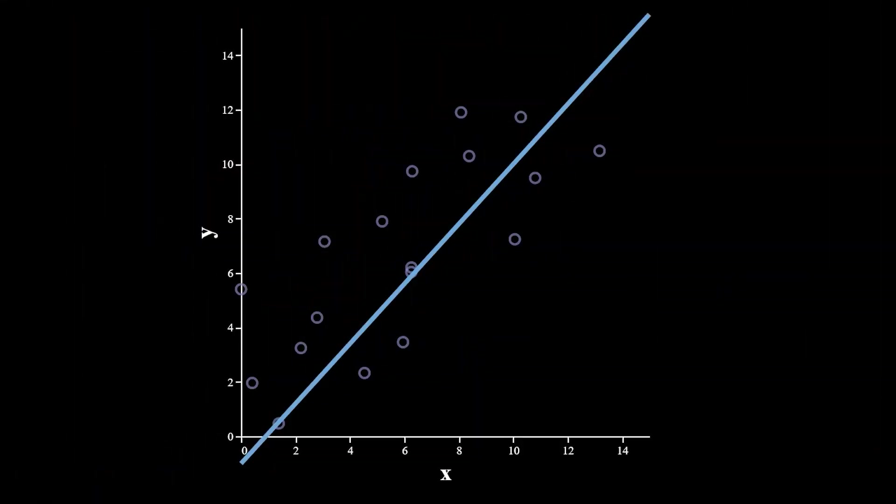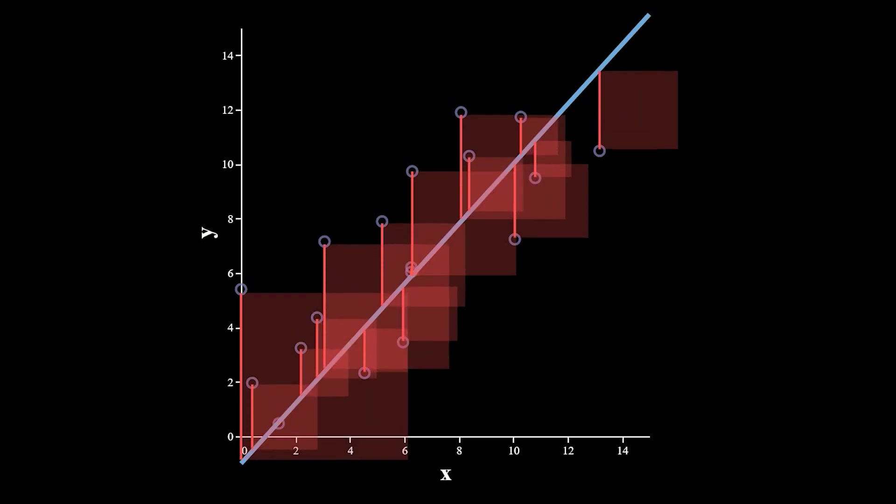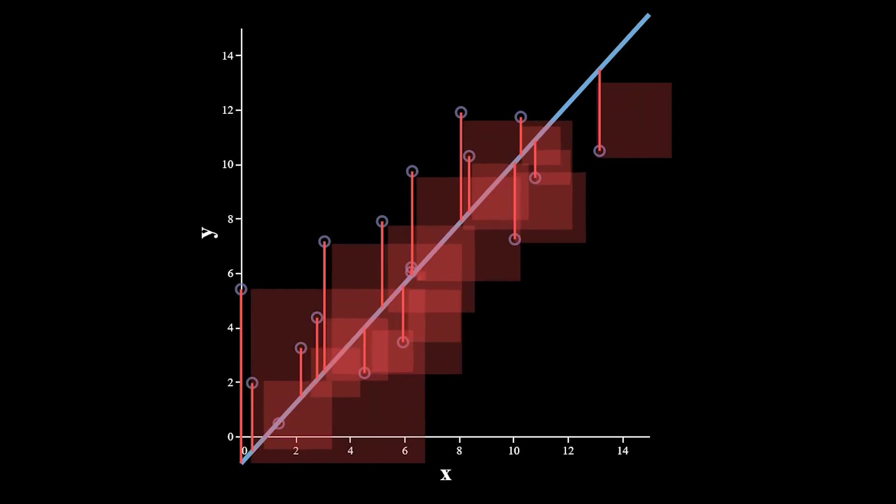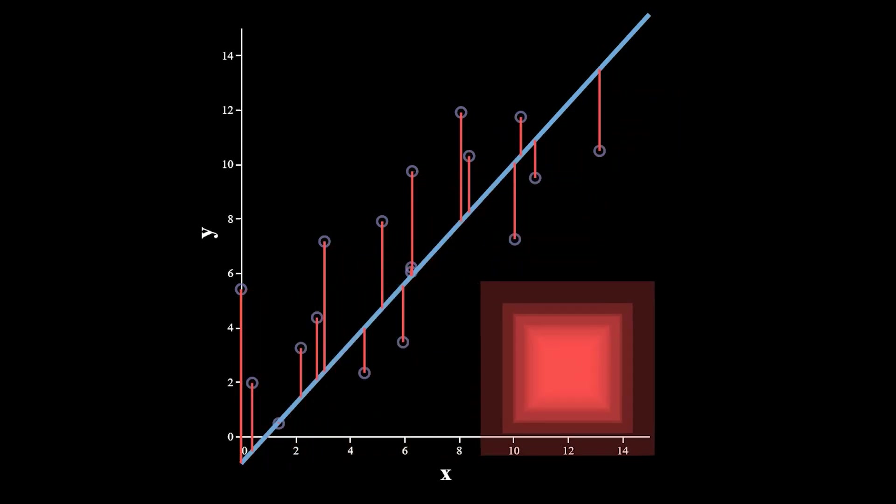But ordinary least squares chooses to minimize a metric called mean squared error. To see that, let's consider a single squared error. That is, we draw a vertical line between the line we're evaluating and one of the data points, and then use that to form a square. The area of this square is a single squared error term. But there are many.